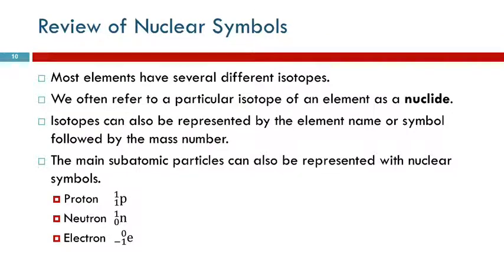Most elements have several different isotopes. Some only have one; some have two or three or four. You can't tell by looking at the periodic table how many an element has. We often refer to a particular isotope of an element as a nuclide. We can also represent isotopes by an element name or symbol followed by a mass number, like carbon-14, where 14 is the mass number of that particular nuclide.